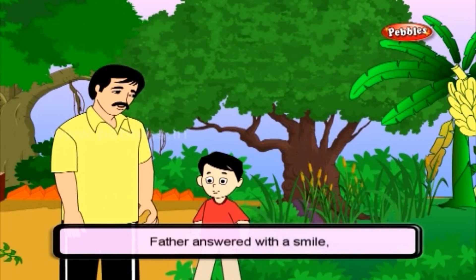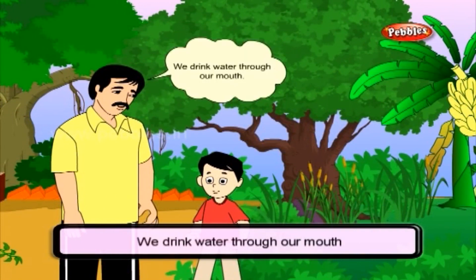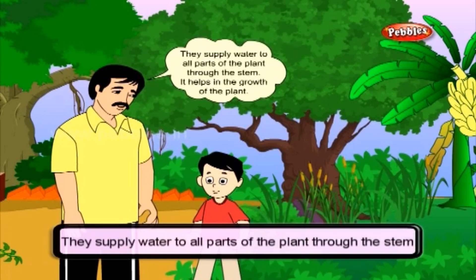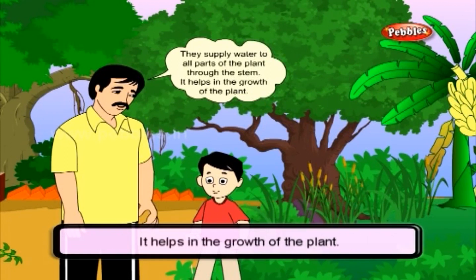Father answered with a smile: 'We drink water through our mouth. The plants absorb water through their roots. Plants absorb minerals also along with water. They supply water to all parts of the plant through the stem. It helps in the growth of the plant.'